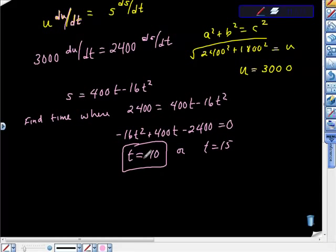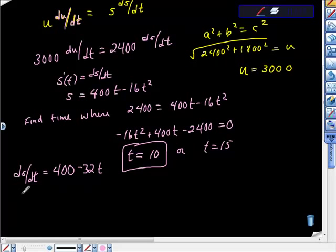Now we want to know what the rate of climb is, and that would be ds/dt, the derivative. We want S prime at time 10, which equals ds/dt. That equals 400 minus 32t. S prime at 10 is 400 minus 320, which equals 80 feet per second.